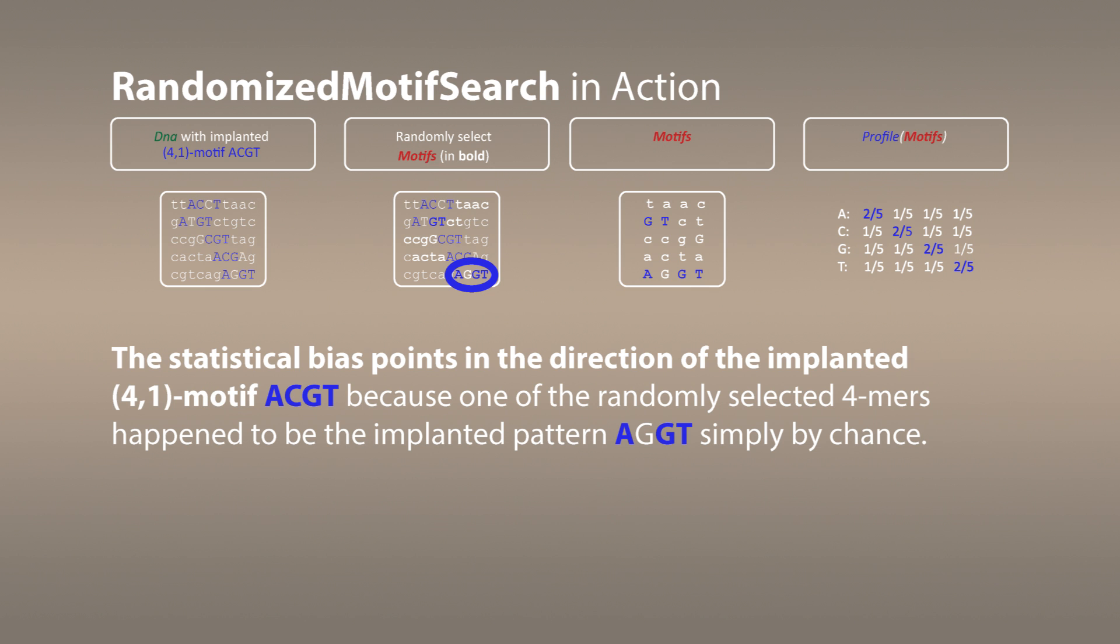Of course it doesn't always happen. It depends on how we have chosen the initial set of randomly selected k-mers in the sequence. But if we try this algorithm a thousand or million times, there is a good chance that eventually one of these attempts will bring us to the correct motif, even if this procedure sounds completely ridiculous.